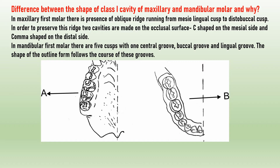What is the difference in shape of the class 1 cavity of a maxillary versus a mandibular molar, and why? In the maxillary first molar, there is an oblique ridge running from the mesolingual cusp to the distobuccal cusp. To preserve this ridge, two cavities are made: C-shaped on the mesial side and comma-shaped on the distal side. In the mandibular first molar, there are five cusps with a central groove, buccal groove, and lingual groove, so the outline form follows the course of those grooves — sometimes called a plus-shaped cavity.